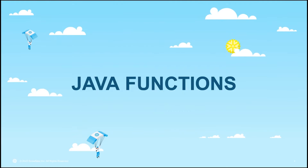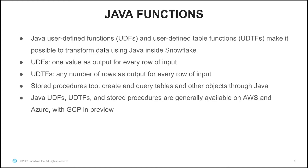First we'll take a look at Java functions. When you use Java functions in Snowflake, you have a choice of using either UDFs or UDTFs. Both of these make it possible to transform data using Java right inside of Snowflake. When you use a UDF, you're returning one value as output for every row of input. With a UDTF, you're returning any number of rows as output for every row of input. We also support using Java stored procedures too, which means that you can create and query tables and other objects using Java and bring your Java-based workloads into Snowflake. Java UDFs, UDTFs, and stored procedures are all generally available on AWS and Azure and are in preview on GCP.